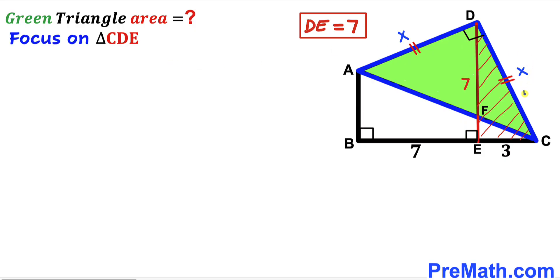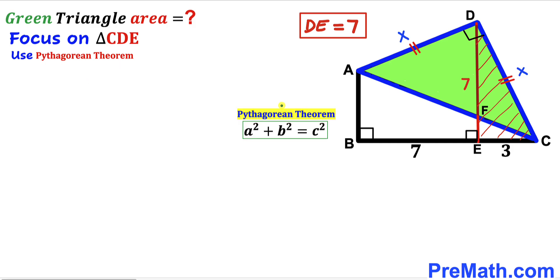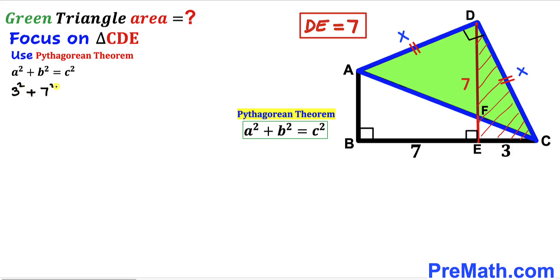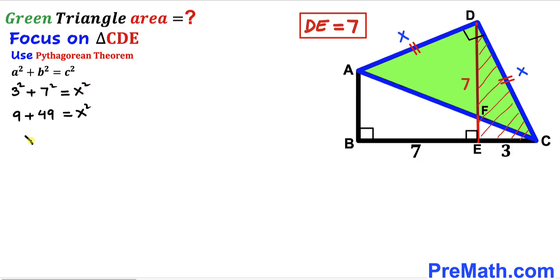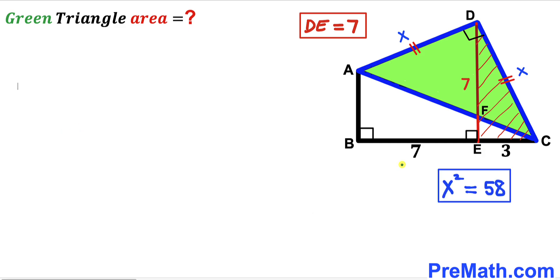Now let's apply the Pythagorean theorem to right triangle CDE. With hypotenuse X and legs 3 and 7, we get 3² + 7² = X², which gives 9 + 49 = X², so X² equals 58.